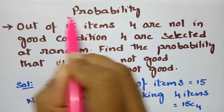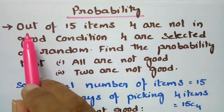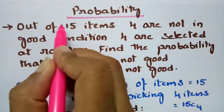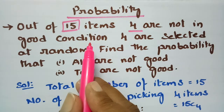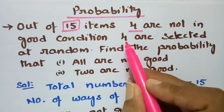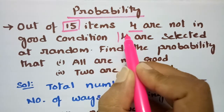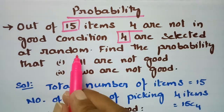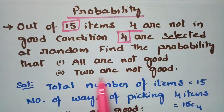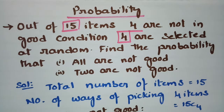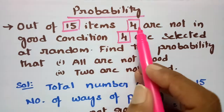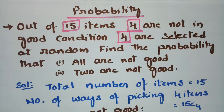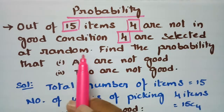This problem is from probability. Out of 15 items total, 4 are not in good condition — meaning 4 are in bad condition and 11 are in good condition. 4 items are selected at random. We need to find the probability that: (1) all are not good, and (2) 2 are not good.